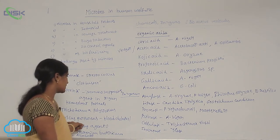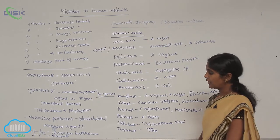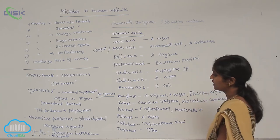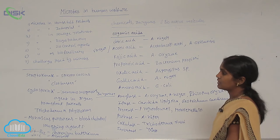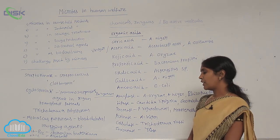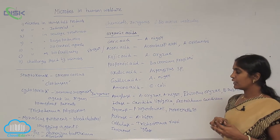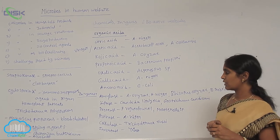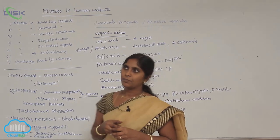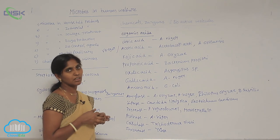Monascus is a yeast that produces strains commercially available as blood cholesterol-lowering agents. These strains fight against cholesterol synthesis genes, gradually decreasing blood cholesterol production. Vitamin B2 is obtained from cultures of Clostridium butyricum, and Vitamin C is obtained from Acetobacter. In industry, many chemicals, enzymes, and bioactive molecules are prepared and obtained from microorganisms.